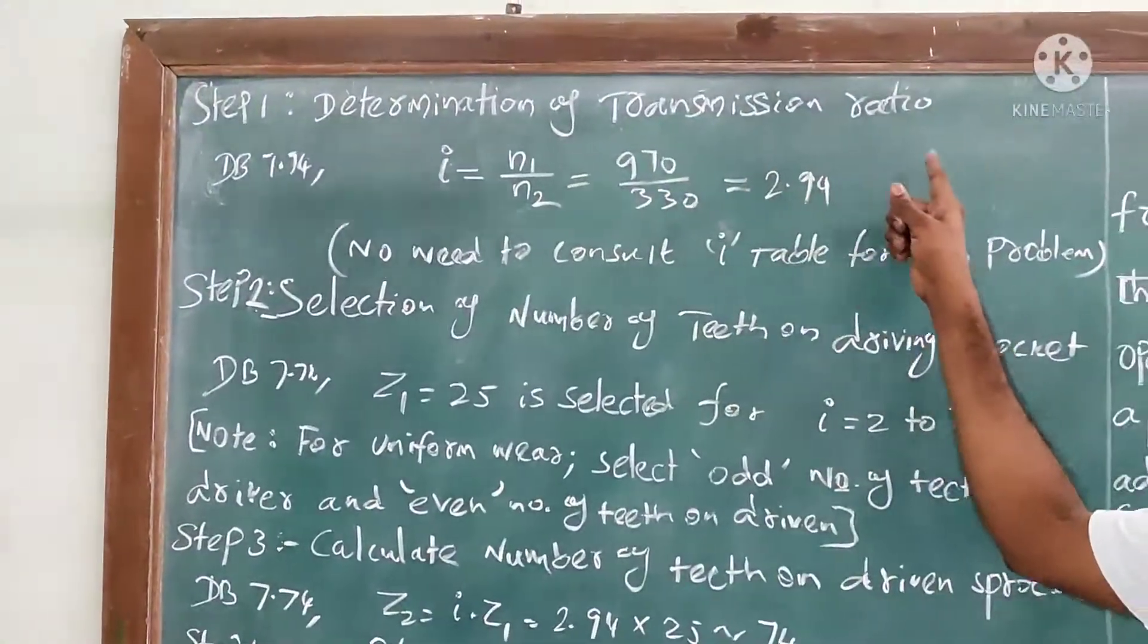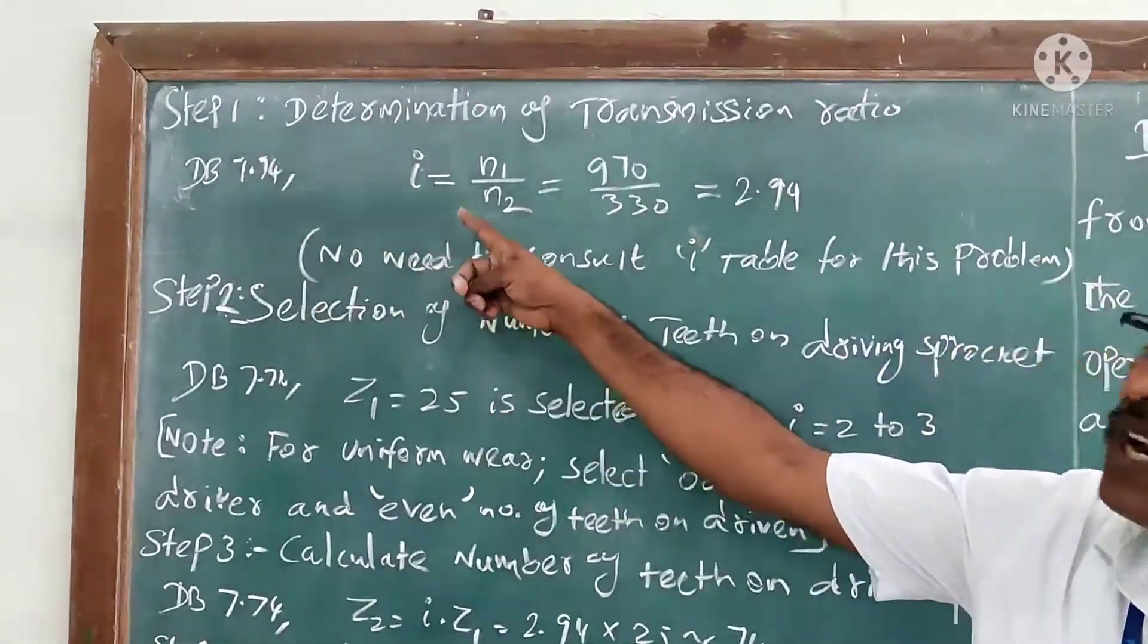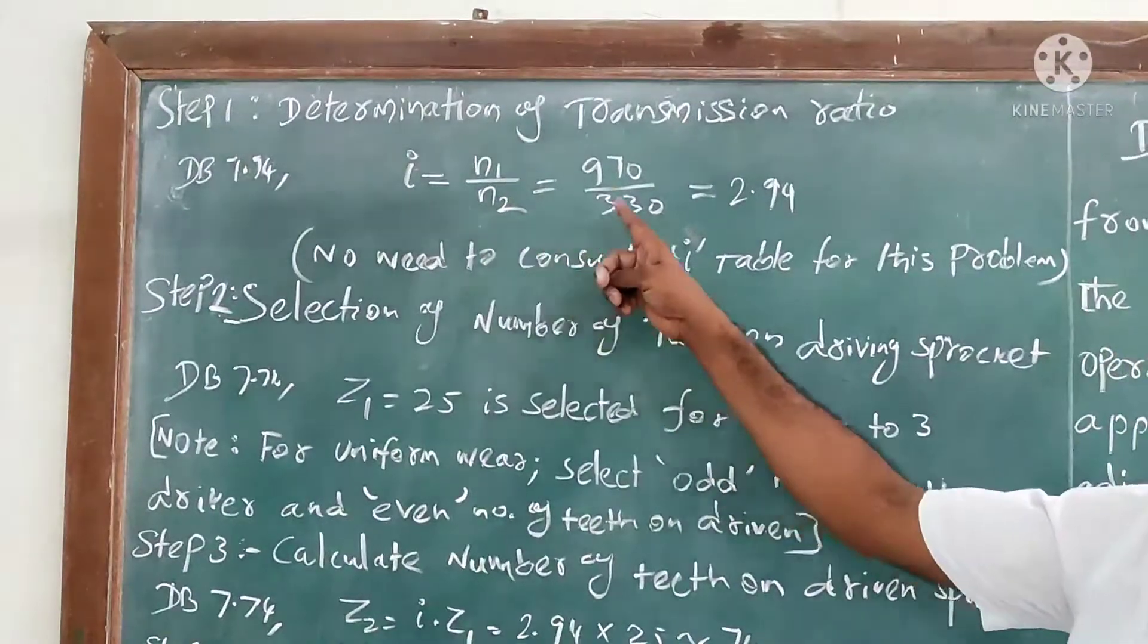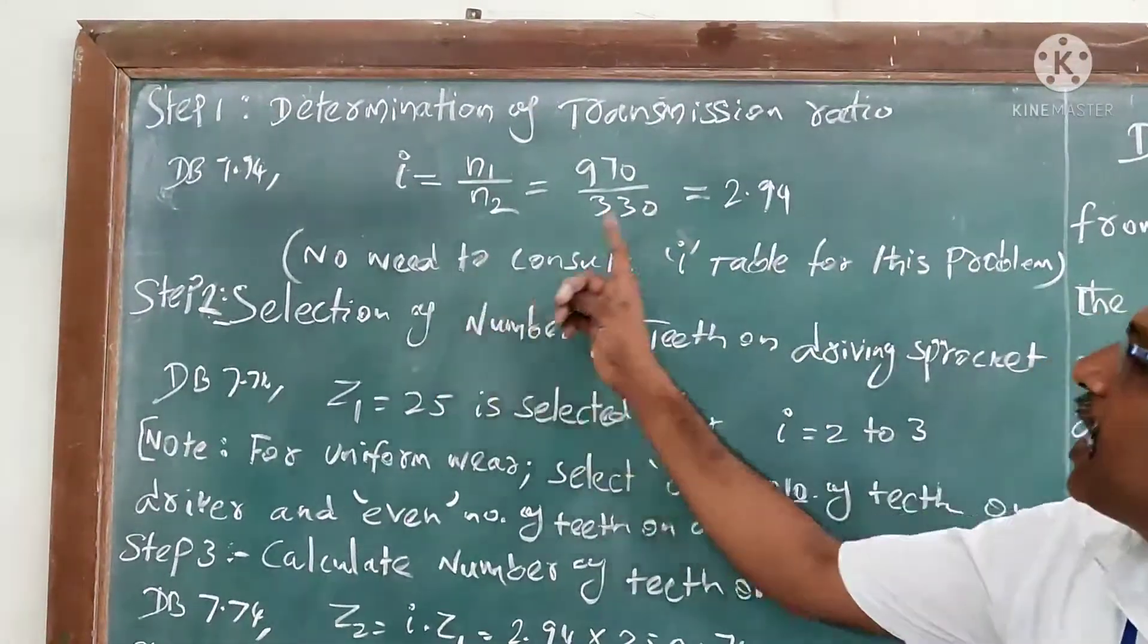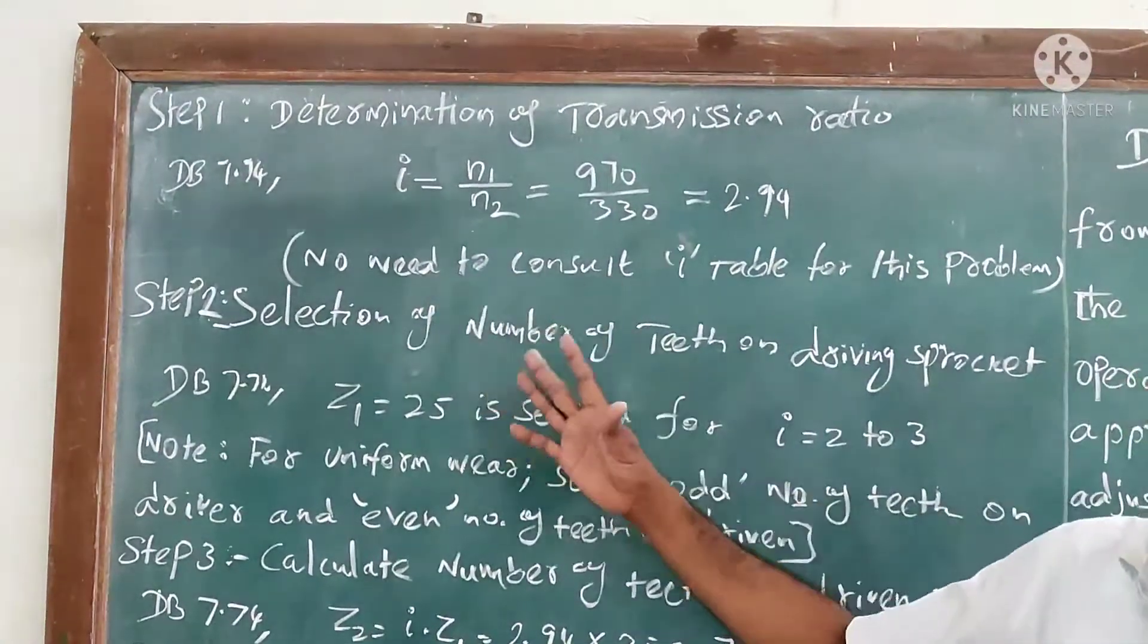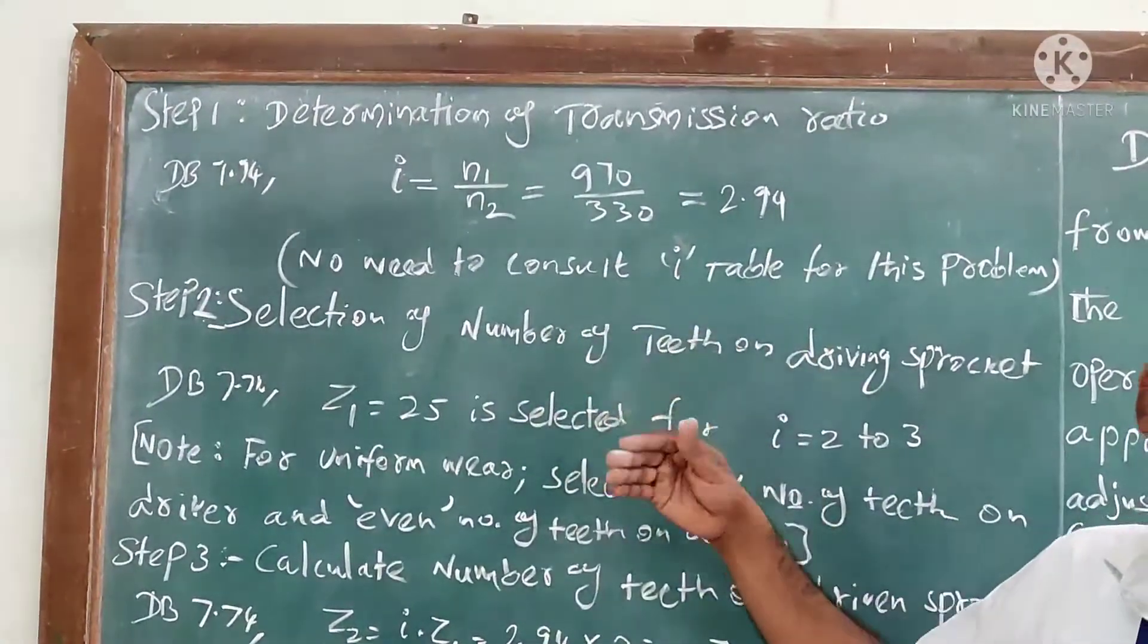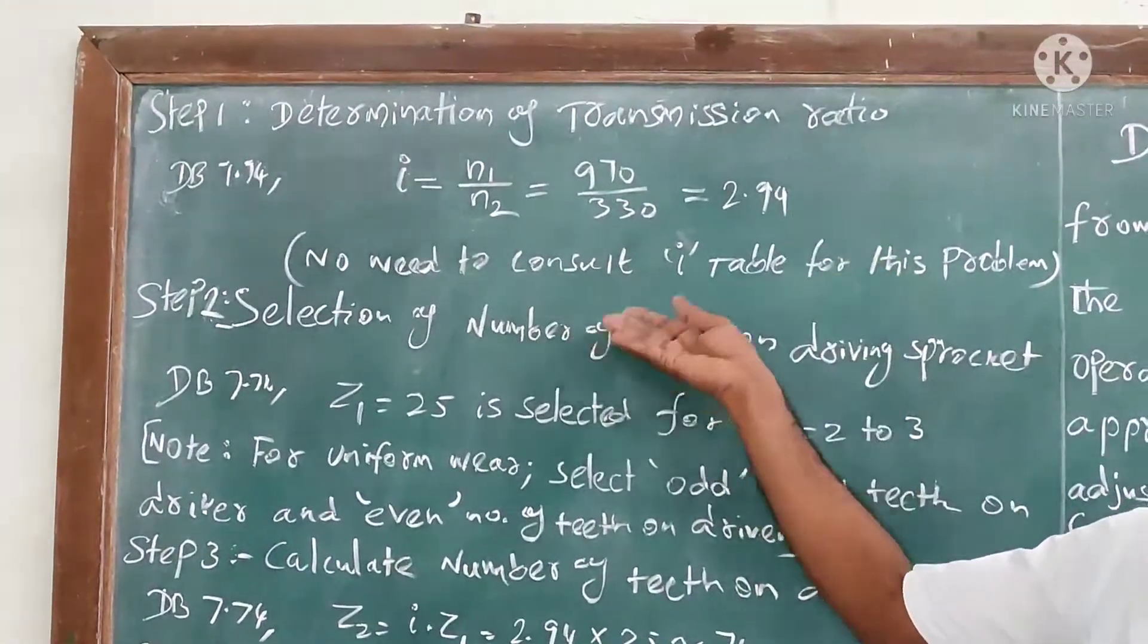Step one: determination of transmission ratio. Refer the data book 7.74, i = n1/n2. Substitute the value: 970/330 = 2.94. Here you can take as it is. Some problems we need to take the next higher standard transmission ratio.